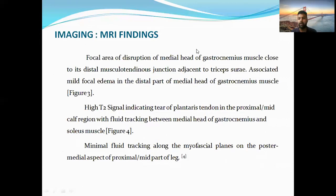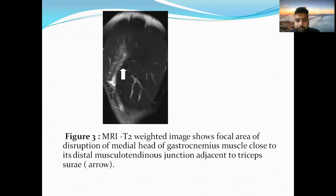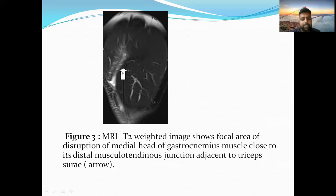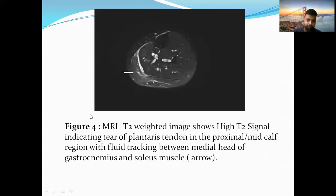On MRI, T2 represents as a high T2 signal intensity fluid area, and focal areas of disruption are seen. Here we can see a focal area of disruption presenting as high T2 signal intensity of the middle head of gastrocnemius muscle, close to its distal musculotendinous junction adjacent to the triceps surae. Here we can see the outer layer is the middle head of gastrocnemius, the inner is soleus, and fluid is seen tracking between them, indicating a tear.